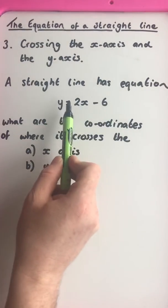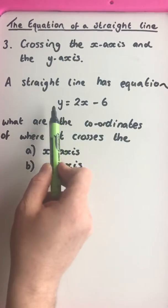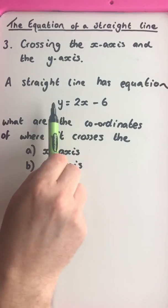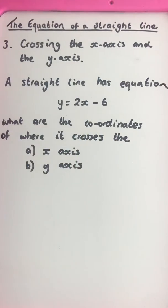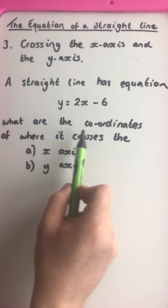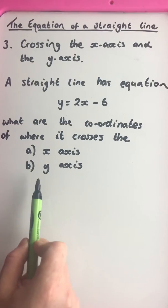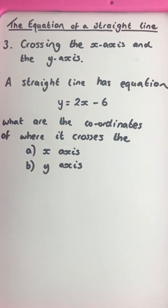So we already know this is an equation. It's a linear equation. If you saw the previous video, it's a straight line. The left-hand side is equal to the right-hand side. So the question is, what are the coordinates of where it crosses the x-axis and the y-axis?